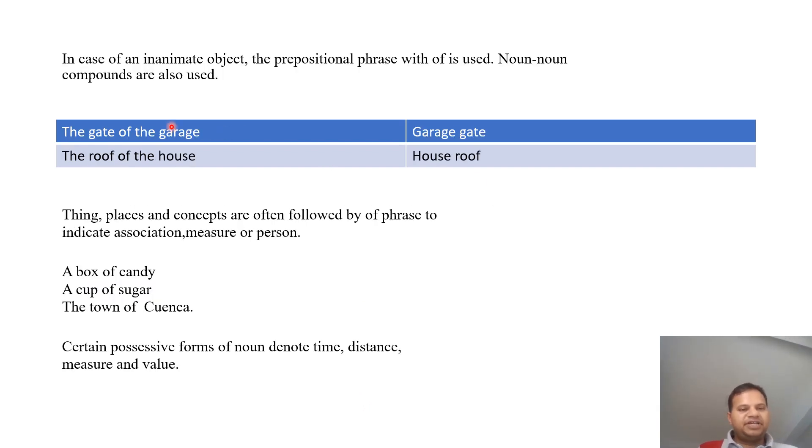In case of an inanimate object, the prepositional phrase with of is used. Noun-noun compounds are also used. For example, gate of the garage, garage gate. Roof of the house, house roof.